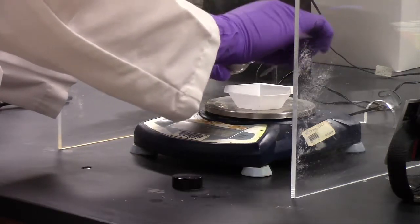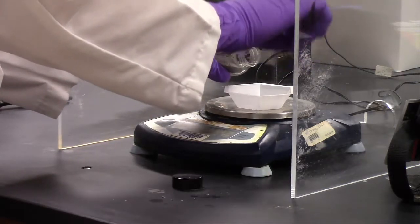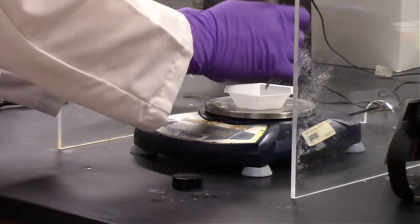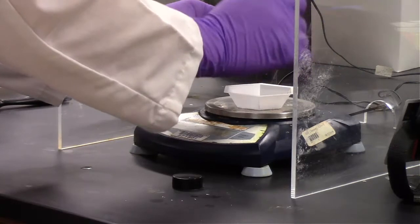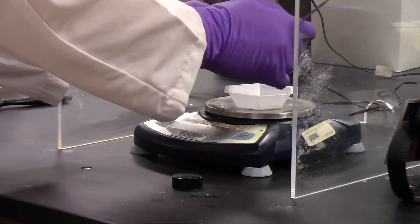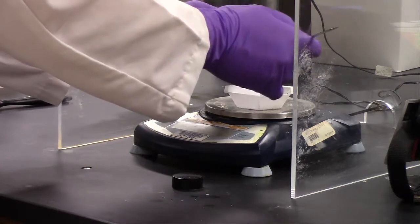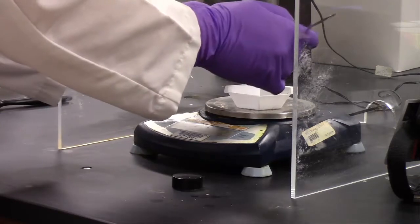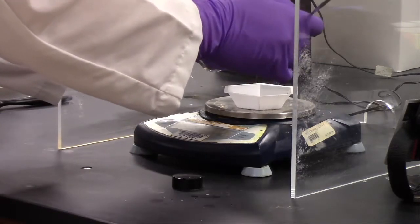We zeroed the weighboat and are taking the spatula and adding that into the weighboat. It's always good to go slow because it's easier to add a little bit more into the weighboat rather than trying to get it from the weighboat and put it back in the original container.